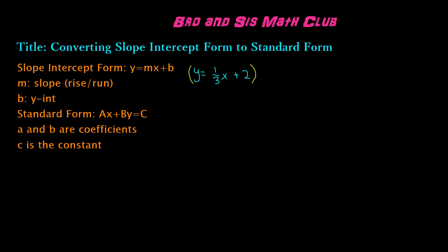So in other words, we're multiplying the entire equation by three, which is the reciprocal of one-third. When we do this, we get three times y, which is three y, equals three times one-third, which is three over three, which is the same thing as one x or simply x, and three times positive two, which is positive six. So now we have all whole numbers, and we have the equation three y equals x plus six.